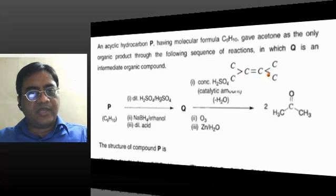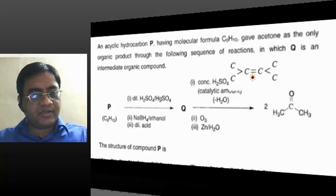This alkene itself is getting formed by the dehydration of alcohol. So Q should be an alcohol which on dehydration is giving this alkene.